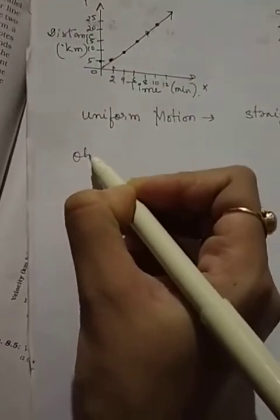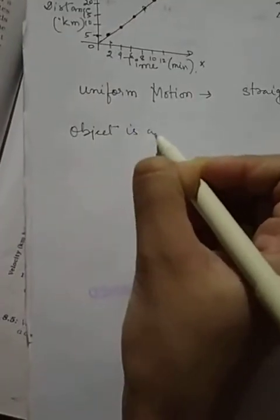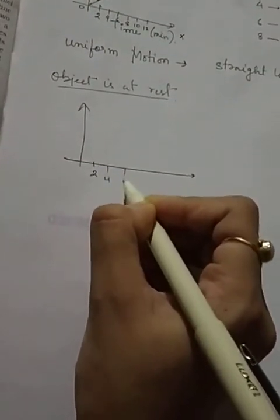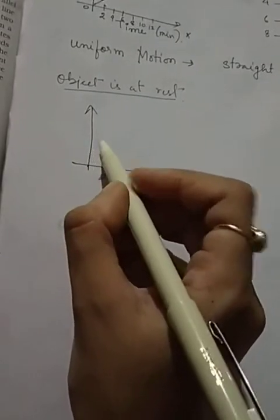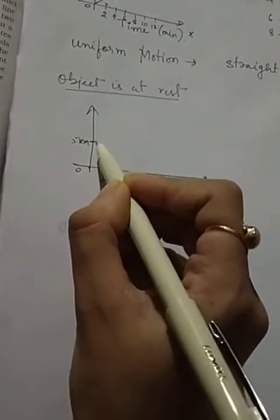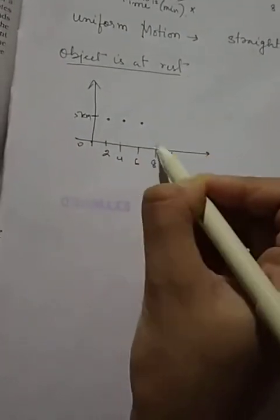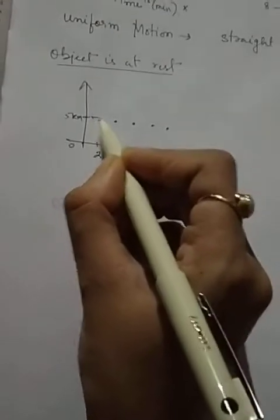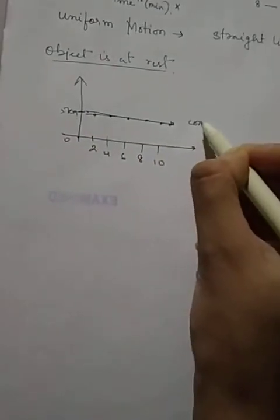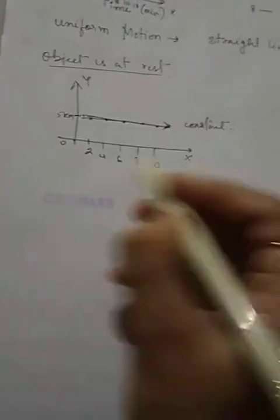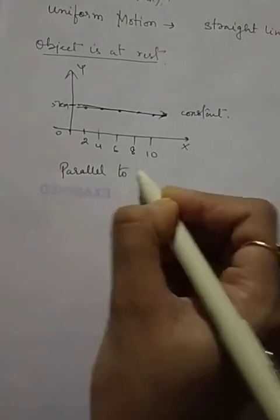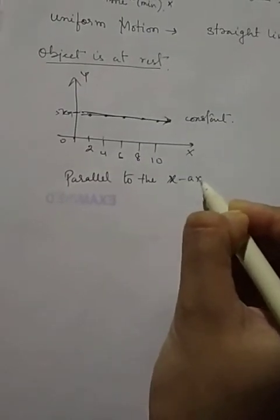Now, what if the object is at rest? Object is at rest means the object is not moving. Time is going on - 4 minutes, 6 minutes, 8 minutes, 10 minutes - but the object is suppose at 5 kilometers. At 5 kilometers at 2 minutes, at 5 kilometers at 4 minutes, at 6 minutes at 5 kilometers, at 8 minutes at 5 kilometers. Therefore the line is a constant line parallel to the x-axis. When the object is at rest, the line is parallel to the x-axis.